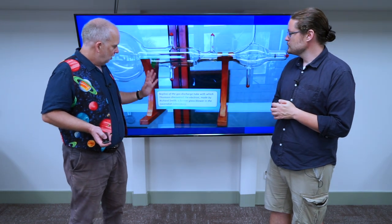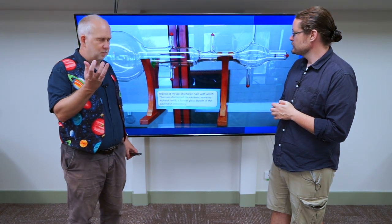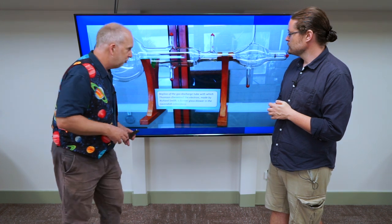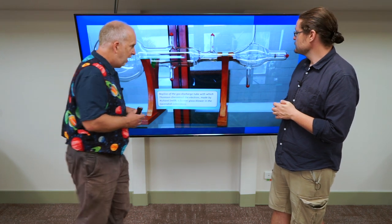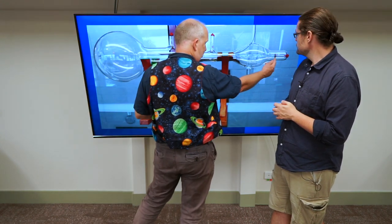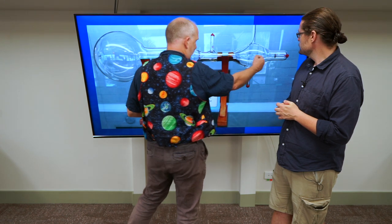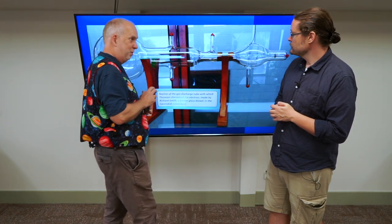And JJ Thompson famously was able to find out that you could take these mysterious particles, which normally flow down a wire in electric current, these things that we now call electrons, and if you apply a strong electric field to them, a strong voltage, you can rip them out and they can fly down a vacuum tube. And you can deflect them sideways and measure their properties.